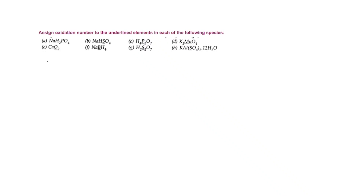In this video, we are going to solve the given question. Here we have assigned the oxidation number to the underlined elements in each of the following species. We have different species given here, and what do we need to do? We need to calculate the oxidation states of the underlined elements.